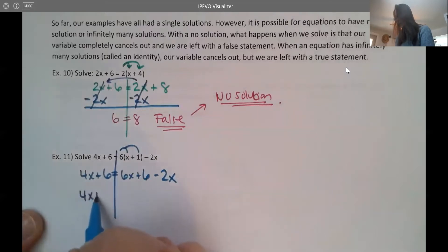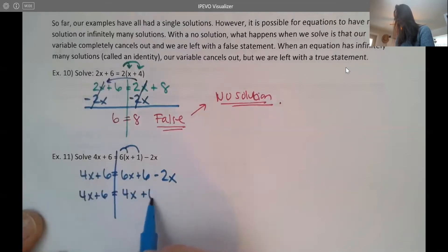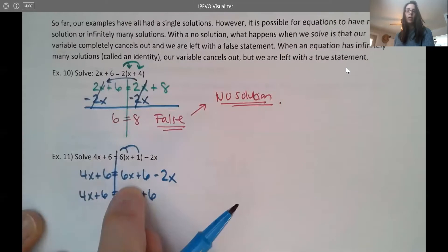On the right, I actually do have some like terms I can combine first. I see a 6x and a minus 2x, which becomes 4x. Notice when I'm combining like terms on the same side of the equation, I don't change any signs. Like I don't do plus 2, plus 2, it's just because they're already together. I only do the pluses or the minuses on both sides when they're on different sides of the equation.